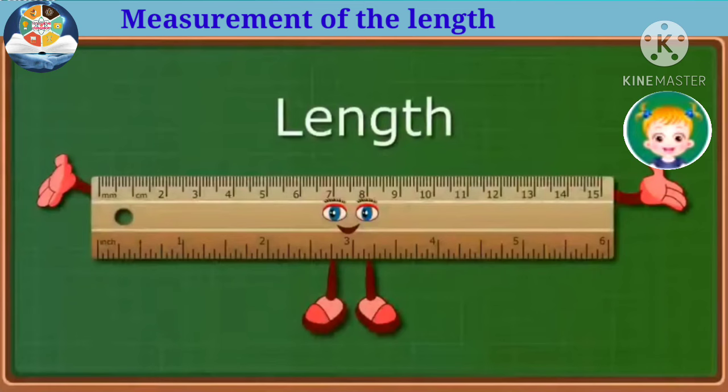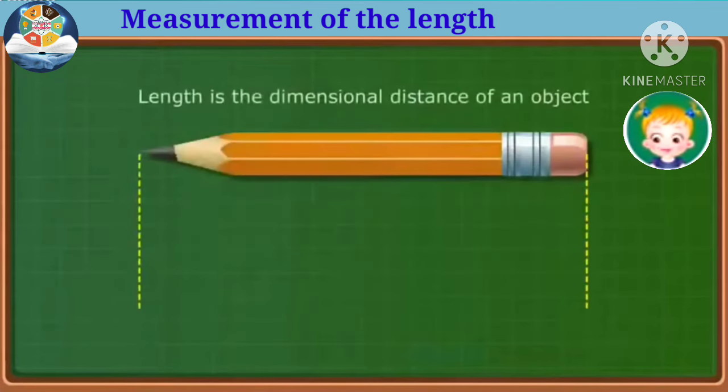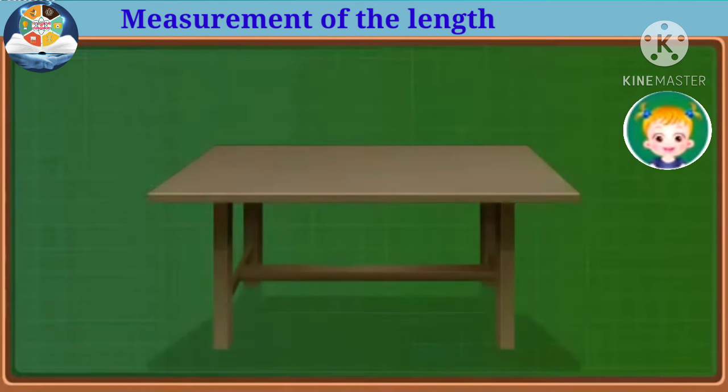Let us know what is length. Length is the dimensional distance of an object. Generally, smaller lengths can be measured in cubits.